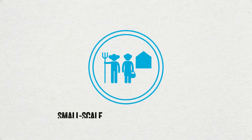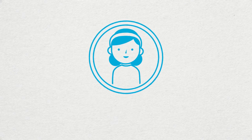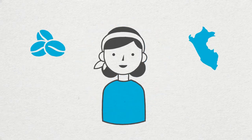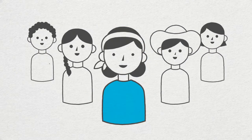Small-scale producers are at the heart of Fairtrade, like Rosa. She grows coffee on her farm in Peru. Rosa is a member of a coffee cooperative.